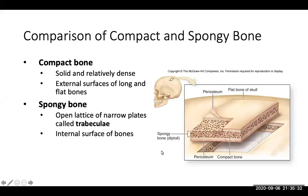Compact bone is solid and dense, forming the external surfaces of long and flat bones. Spongy bone contains trabeculae — an open lattice of narrow plates that looks like a sponge — and this forms the internal surface of bones. You can see how these two types look visually different.